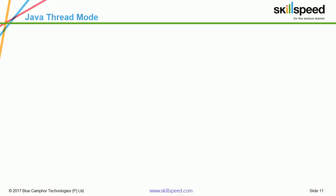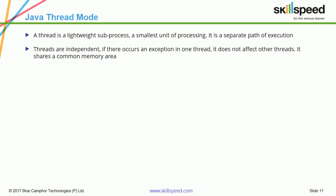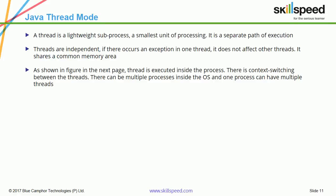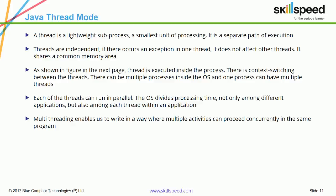The next concept is the Java Thread Model. A thread is a lightweight sub-process and the smallest unit of processing — a separate path of execution. Threads are independent; if an exception occurs in one thread, it does not affect other threads. Threads share a common memory area. A thread is executed inside a process; there is context switching between threads. There can be multiple processes inside the OS, and one process can have multiple threads, each running in parallel. The OS divides processing time not only among applications but also among each thread within an application. Multi-threading enables writing programs where multiple activities can proceed concurrently. Note that at a time only one thread can be executed.